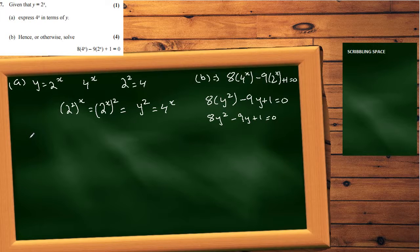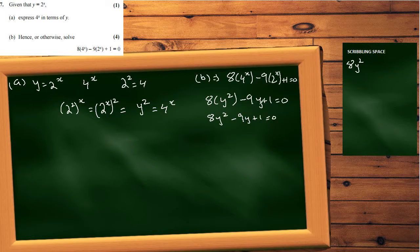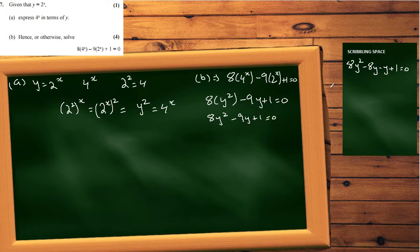To factorize 8y squared minus 9y plus 1, we need to split the middle term into two numbers that multiply to give 8 times 1 equals 8, and add to give minus 9. The choice is minus 8 and minus 1, because minus 8 times minus 1 is plus 8, and minus 8 plus minus 1 is minus 9.